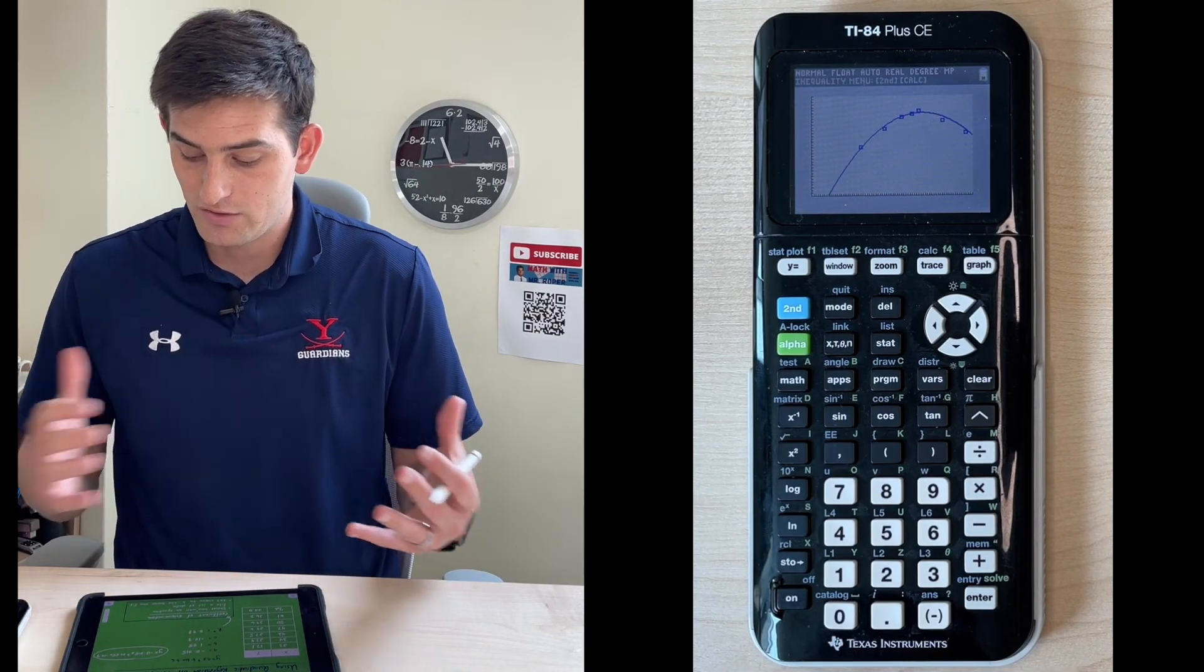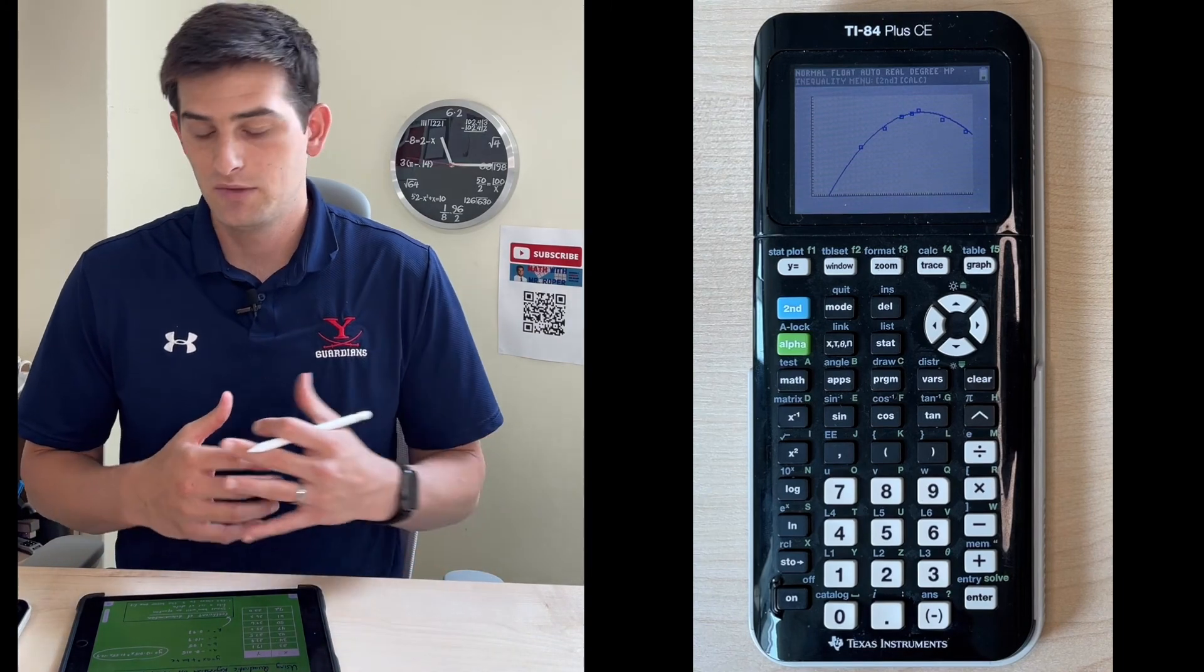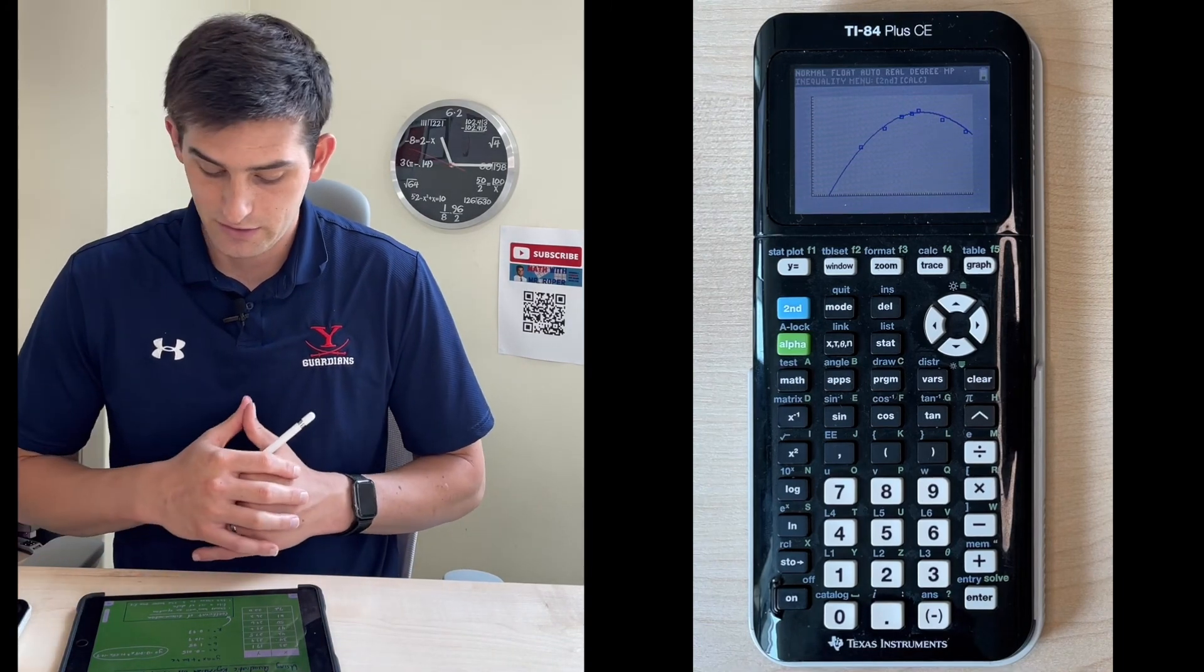Now we can use different features if we want to find the maximum of that parabola. We can do that on our calculator as well, but that's how you can use the TI-84 Plus CE graphing calculator to find quadratic regression.